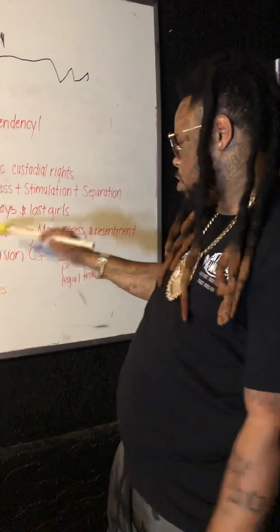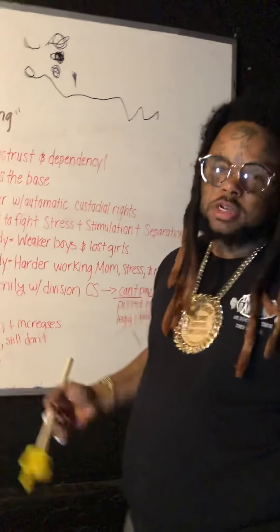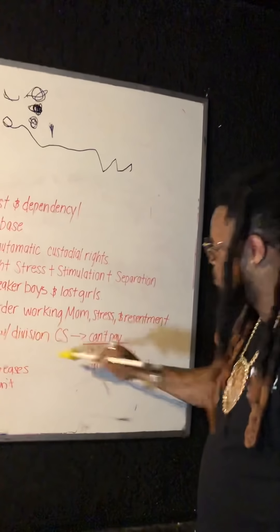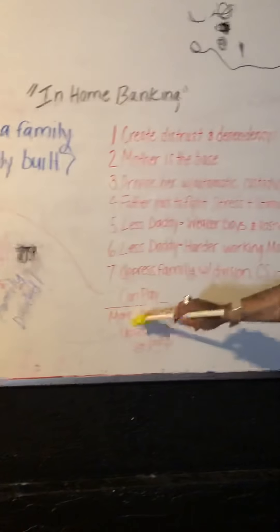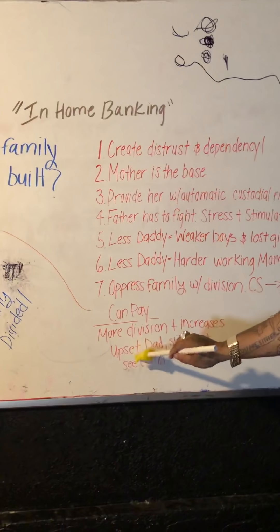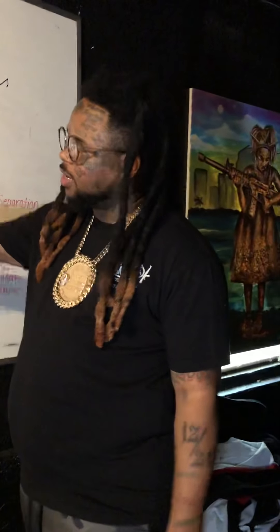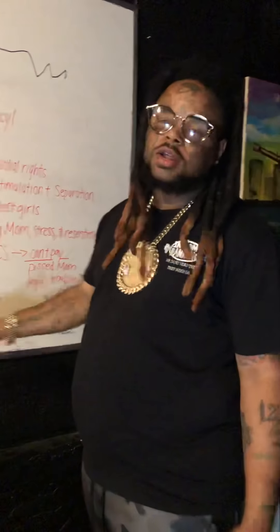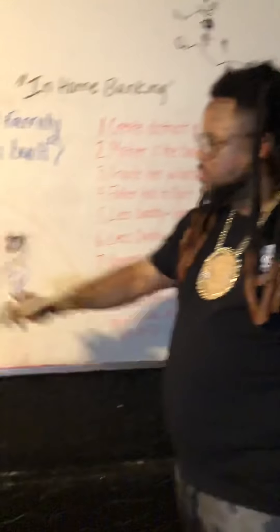Number seven: how do you oppress the family? Division. The way child support is set up — if he can't pay, you get a pissed mom and a dad in legal trouble: garnished wages, jail time, suspended license. That creates more division because mom is pissed she's not getting from dad what the system told her she deserves. If he can pay, it still creates division — mom may want to increase the amount, dad feels robbed, and even when you pay, in a lot of states you still don't get to see your child. That's a whole other courtroom to fight for custody. They just want their money.